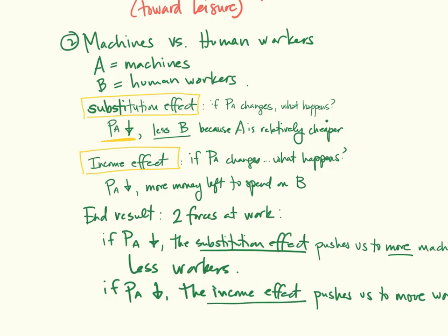So as machines get better and faster and cheaper, what happens? We find that humans, in as much as they are substitutes for machines, will be less employable, because they're now relatively more expensive, due to the fact that machines got cheaper. So substitution effect leads employers to hire more machines and fewer workers. You would expect unemployment in that case.